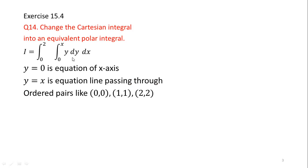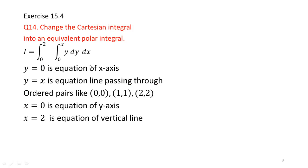The limits of y are 0 and x. y equal to 0 is the equation of the x-axis, and y equal to x is the equation of a line passing through points where the value of x and y are the same, like (0,0), (1,1), (2,2). x equal to 0 is the equation of the y-axis, and x equal to 2 is the equation of a vertical line. We will plot these lines. We have the x-axis and y-axis since they are involved in our boundaries, so I have made them dark.